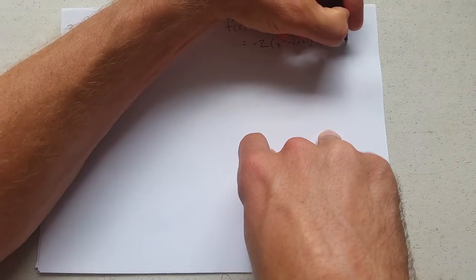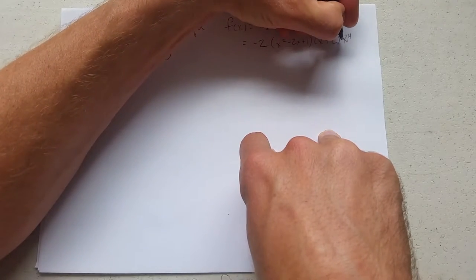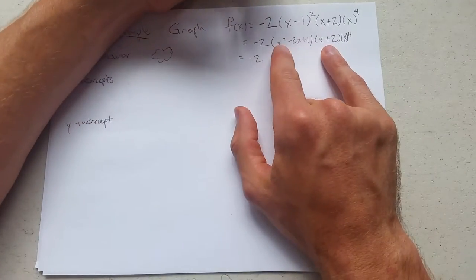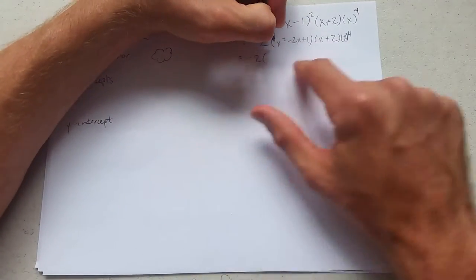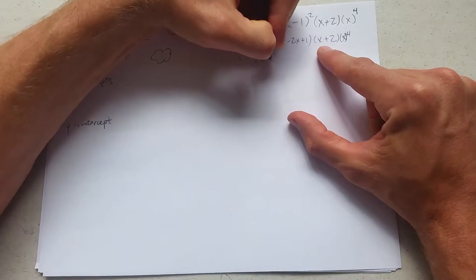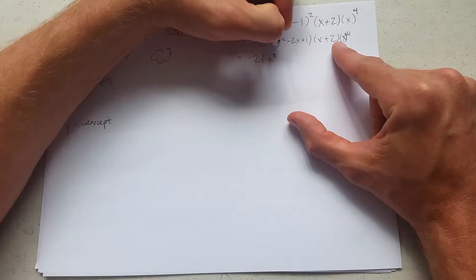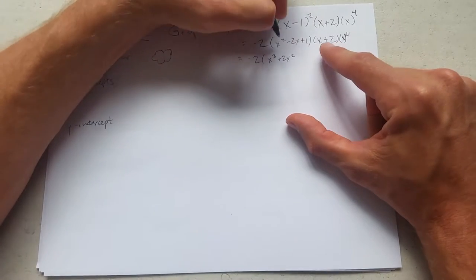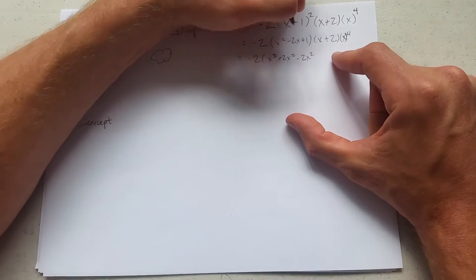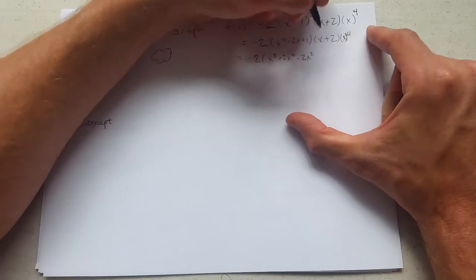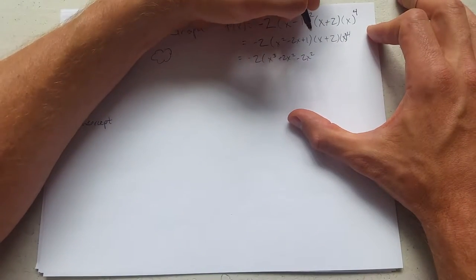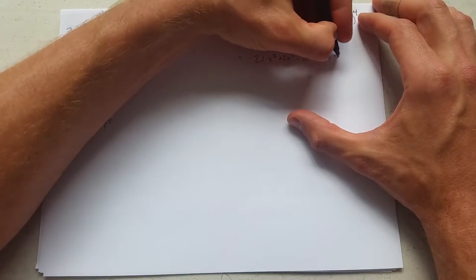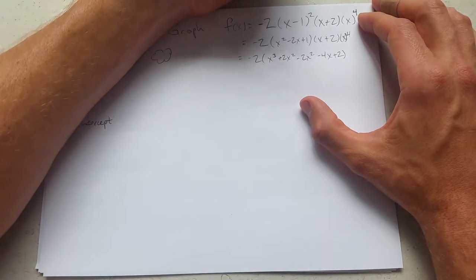x plus 2 times x to the 4th. Now I have to do what I call superfoiling here. So x squared times x is x cubed, x squared times 2 is 2x squared, minus 2x times x is minus 2x squared, minus 2 times minus 4x, and plus 2.